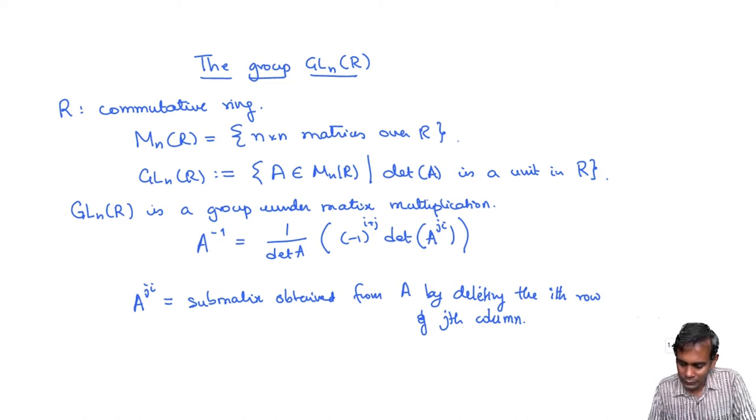So really what you can think of this is as determinant of A inverse. And saying that determinant of A is a unit allows us to write this down. You see that GL_n(R) is a group.